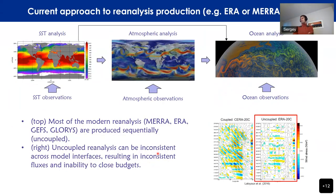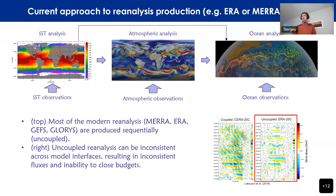Before going to the vision for the future, let's review how a dataset like ERA5 comes to be. It starts with observations of sea surface temperature, mostly from satellites, and a standalone SST analysis is created — one that does not use dynamical models. This SST analysis is used to drive atmospheric analysis combined with atmospheric observations, producing something like ERA5. ERA5-like analysis is then used to drive ocean models to produce ocean analysis. This is the sequential or uncoupled reanalysis procedure.